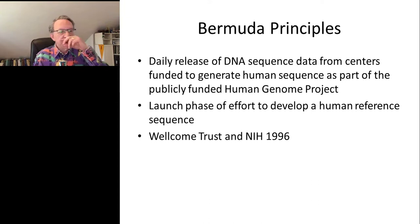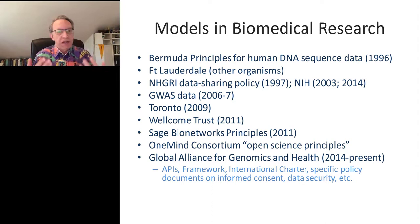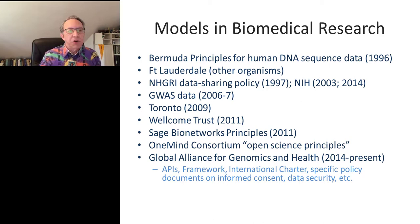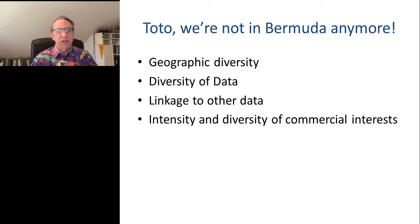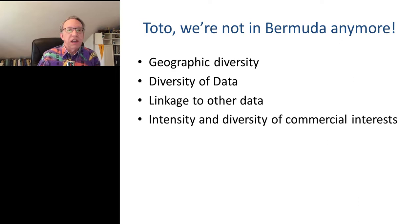The Bermuda principles have been modified for other organisms and embedded in policies like the National Human Genome Research Institute at NIH, first stated in 2003 and reiterated in 2014. There are many other examples of policies that have emerged over the years. But the problem is that the data we're dealing with these days are much more geographically dispersed, involve different kinds of data, and have many more linkages among databases. The world of biotechnology and medicine has gotten a whole lot more complicated since the Bermuda principles were enunciated in 1996.